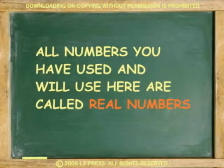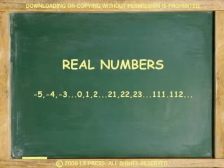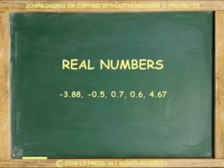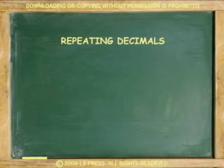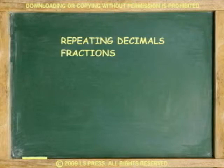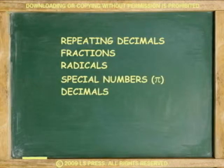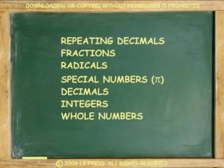First, let's understand numbers. All the numbers that you have used so far in mathematics to compute operations and solve problems are called real numbers. A real number could be any number, fraction, or decimal. For example, all of the following are real numbers: repeating decimals, fractions, roots — remember, roots are called radicals — special numbers such as pi, decimals, positive and negative integers, whole numbers, and natural numbers.